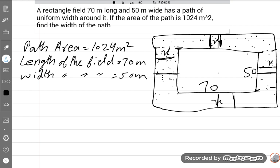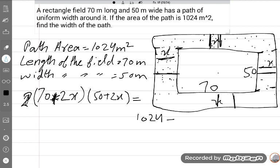So the equation we will make: the whole area including the rectangular field. What is the formula of area? Length multiplied by width of the rectangle: (70 + 2x)(50 + 2x) is equal to 1024, the path area plus 70 × 50.